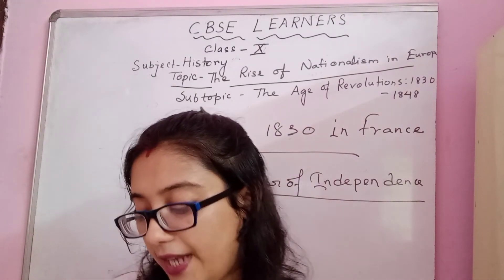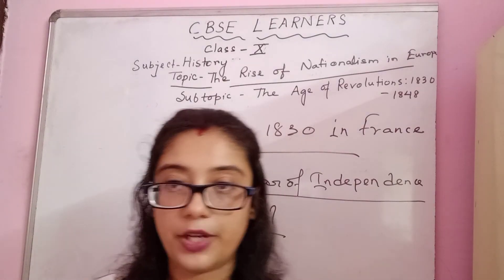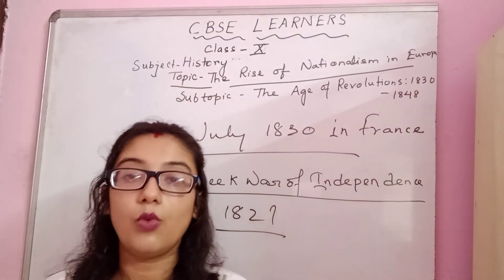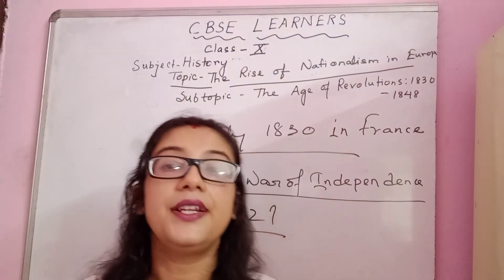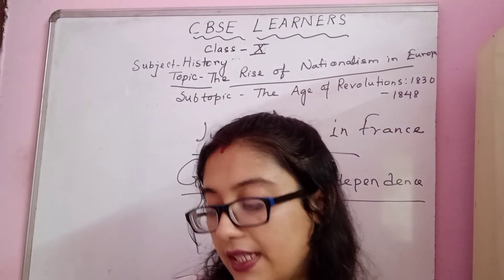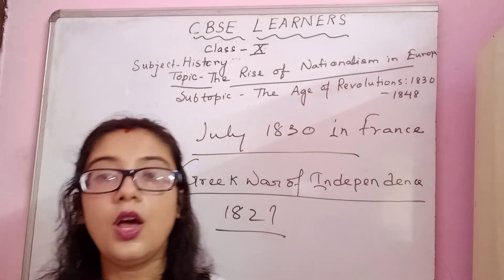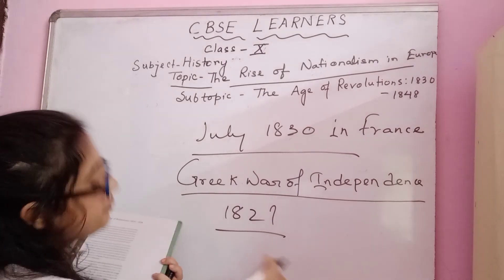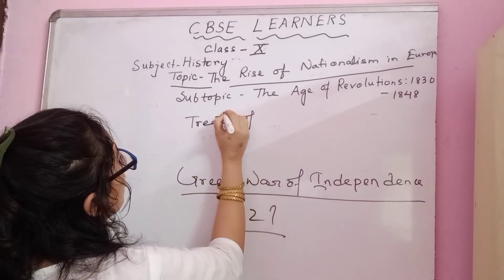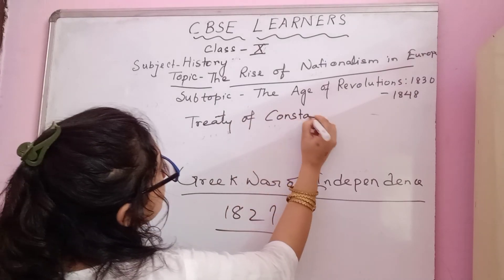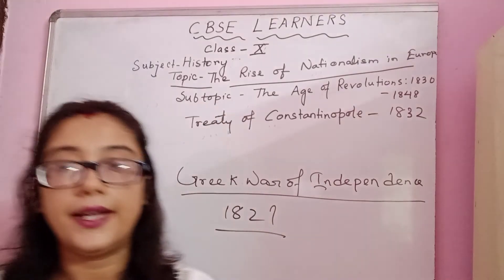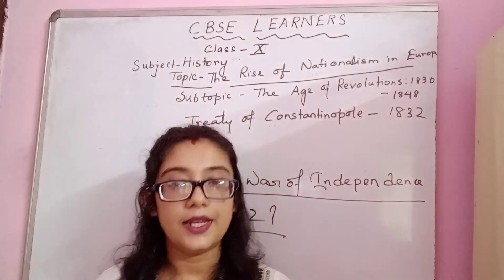The English poet Lord Byron organized funds and later went to fight in the war, where he died of fever in 1824. Finally, the Treaty of Constantinople of 1832 recognized Greece as an independent nation. These dates are very important. The Treaty of Constantinople, 1832, declared Greece as an independent state.